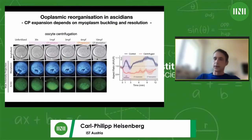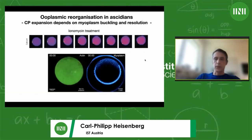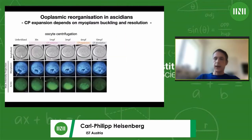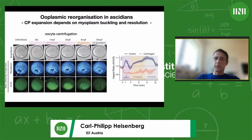This is a quantification of what I described: in wild-type oocytes, the contraction pole forms normally. In oocytes where centrifugation has removed the myoplasm from the vegetal pole, the contraction pole no longer forms because the myoplasm is not buckling there.